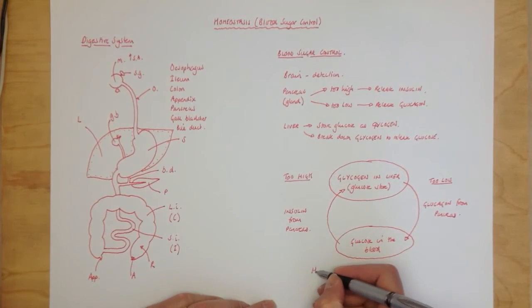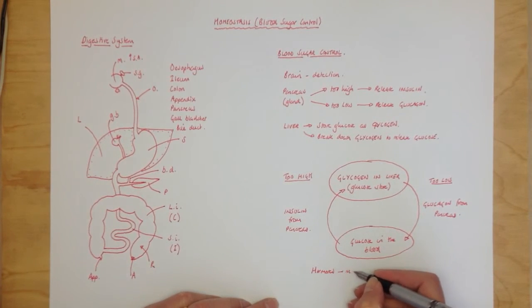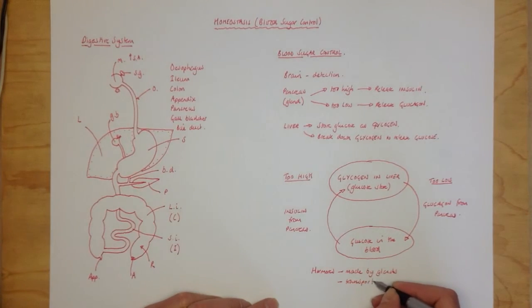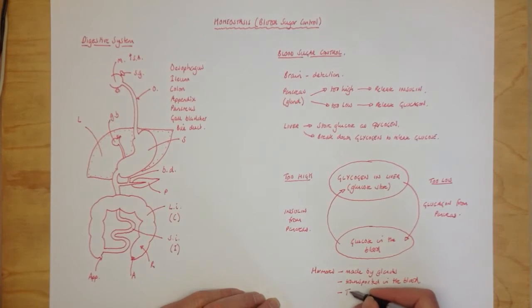Now hormones are made by glands, and they are transported in the blood. And eventually, the blood takes them to the organ that they're meant to affect, which is called the target organ.